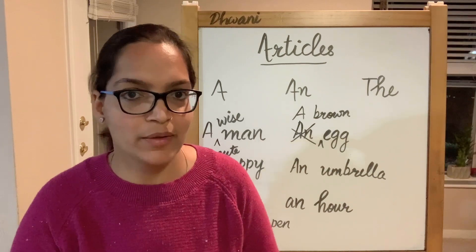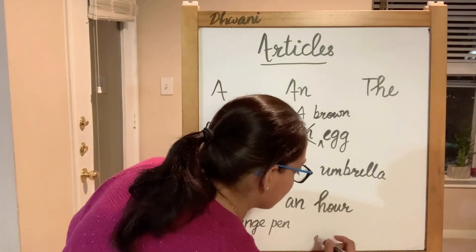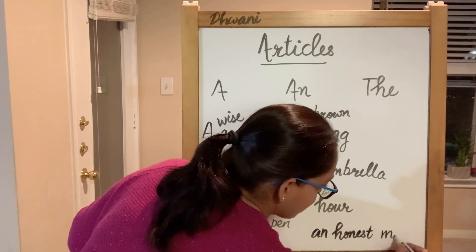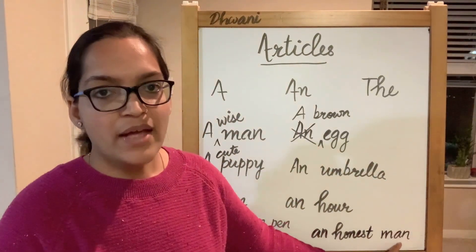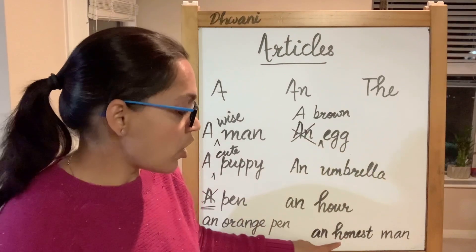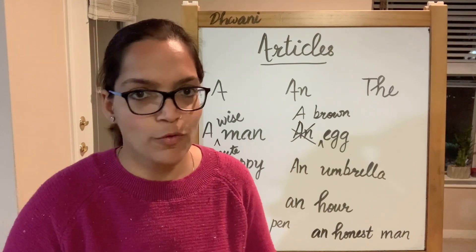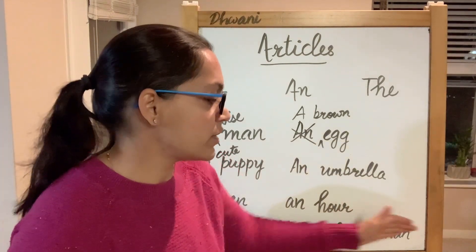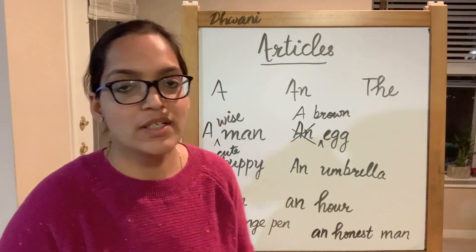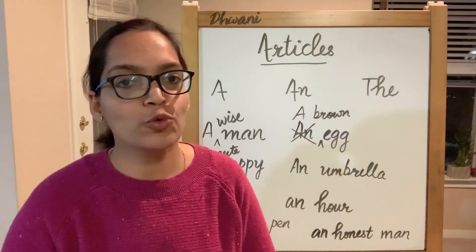Let's take one more example: 'an honest man.' Man is the noun, and honest is the adjective describing the man. Honest begins with h, but the word 'honest' has a beginning sound of a vowel, so there is going to be 'an honest man.' An depends upon the first sound of the word next to it. So 'an honest man' — I hope that was clear. Now let's move on to 'the.'